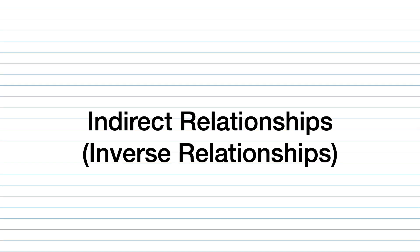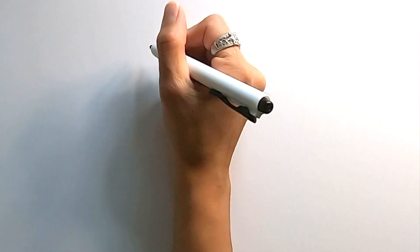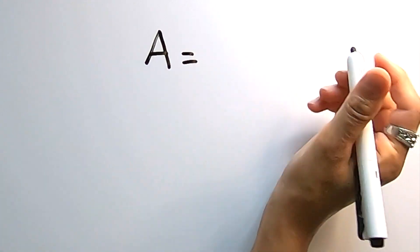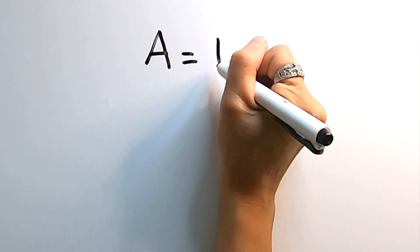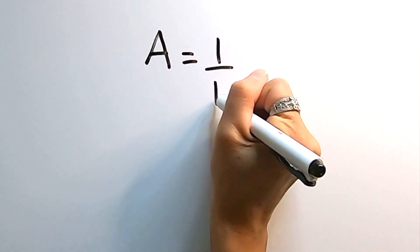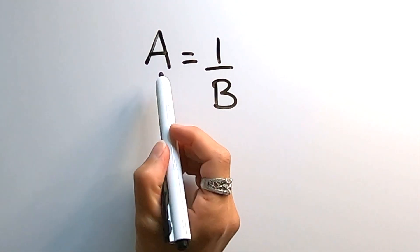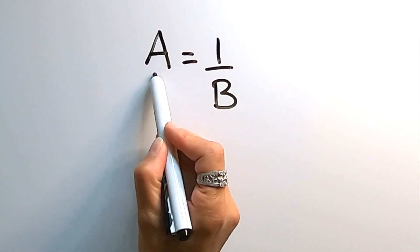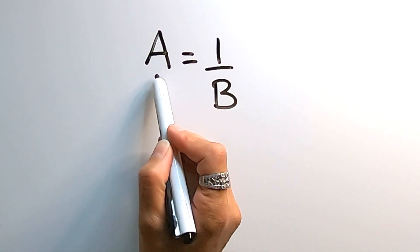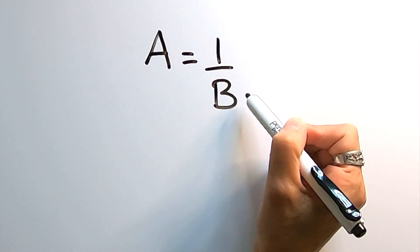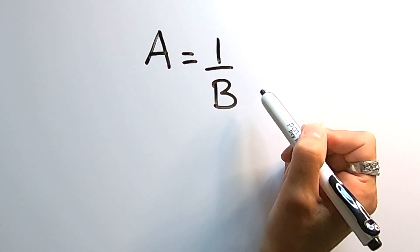With an indirect relationship, we have a variable on one side of the equal sign equal to the inverse of another variable. So on one side of the equal sign, the variable is in the numerator, and on the other side, the variable is in the denominator.